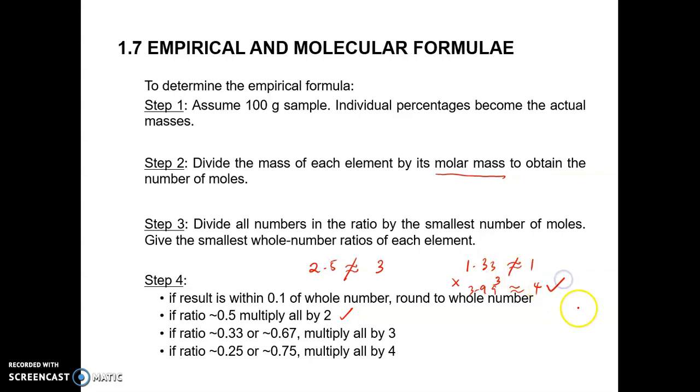If the ratio is 0.25 or 0.75, you have to multiply by 4.